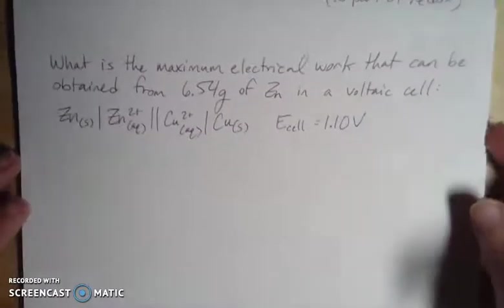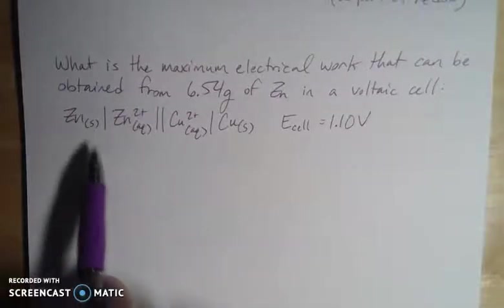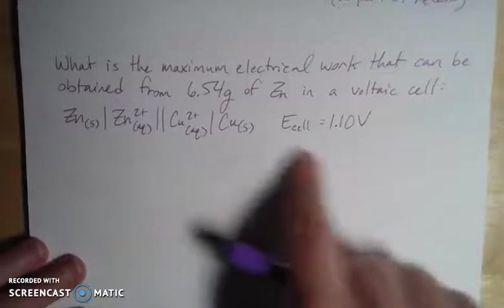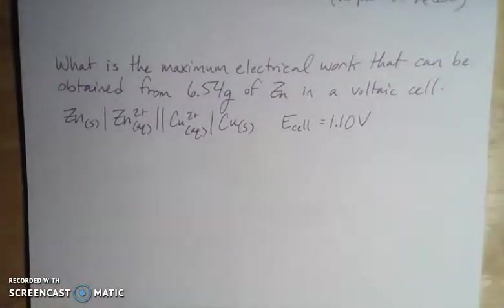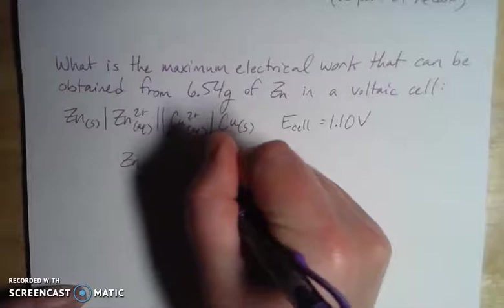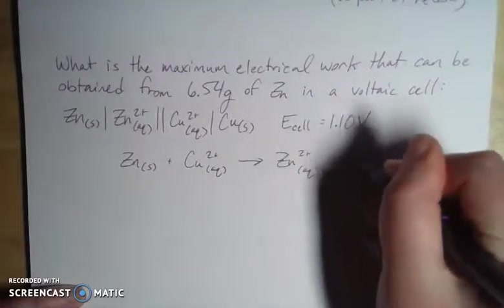So let's look at a sample calculation for that. Let's look at this guy. What is the maximum amount of electrical work that can be obtained from this many grams of zinc? And we're in this cell, so this is our zinc-copper cell, which is a really common one, so you've seen this in a lot of examples so far. And the cell potential for this cell, which we've calculated in prior videos, is 1.10 volts. So my reaction here, my overall reaction, is going to look like this. So we have our zinc and our copper 2+ gives me my zinc 2+ and my copper metal.